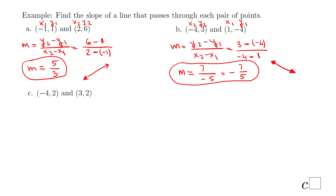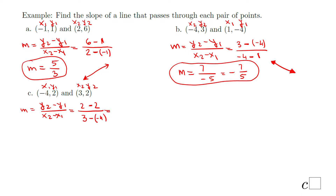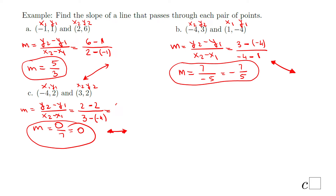For part c, labeling x1, y1, x2, y2, and using m = y2 minus y1 over x2 minus x1, we get: y2 minus y1 is 2 minus 2 = 0, and x2 minus x1 is 3 minus negative 4 = 7. So the slope is 0 over 7, which simplifies to 0. Whenever the slope is 0, you have a horizontal line.